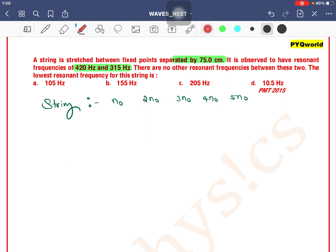If we consider two harmonics, 2n0 and 3n0, the difference is 3n0 minus 2n0 equals n0. The difference is the fundamental frequency.